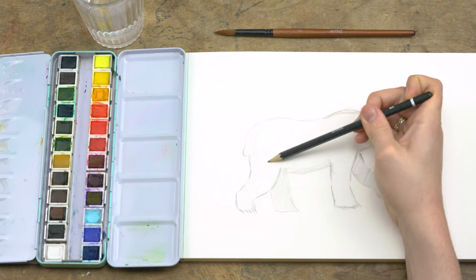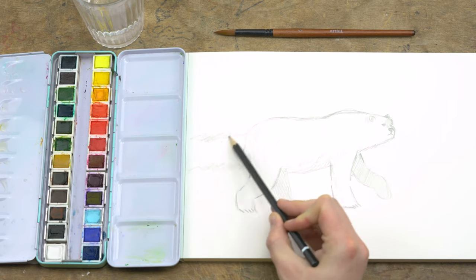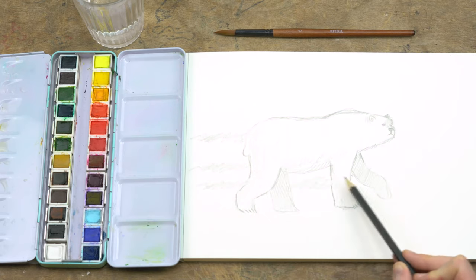I'm using my pencil to add some light fur texture on the inside of the polar bear and adding some rough shading in the background just to give the sense of the shadow of the snow mounds.